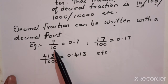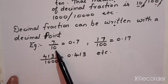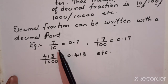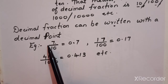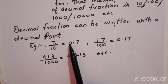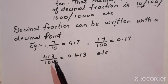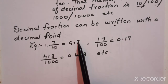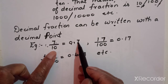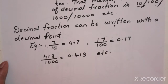Seven upon ten means an object divided into ten parts and we have taken seven. To write it as a decimal: count the zeros in the denominator — only one zero, so keep one place after the decimal point. No integer part, so we put 0. Replace that zero with 7, replace the 1 with a point — so we get 0.7.